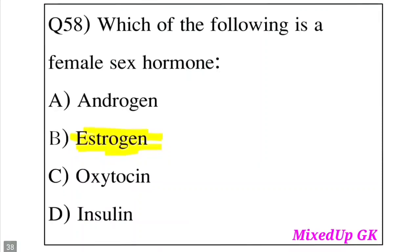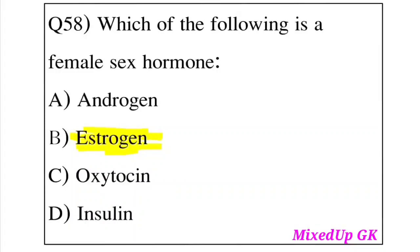Question 58: Which of the following is a female sex hormone? Option A: Androgen. Option B: Estrogen. Option C: Cytosine. Option D: Insulin. The answer is Option B, Estrogen. Estrogen is the female sex hormone.